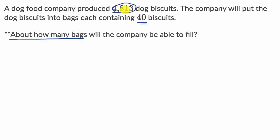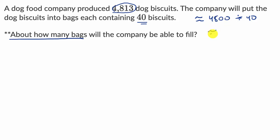But maybe I could round this to something that is very easy to divide by 40. If I round to the nearest hundred, that gets me to 4,800. So this is going to be approximately equal to 4,800 divided by 40. Why did I like 4,800? Because four goes into 48 really cleanly. Four goes into 48 twelve times, so it goes into 4,800 1,200 times, meaning 40 would go in 120 times. So approximately 120 bags.